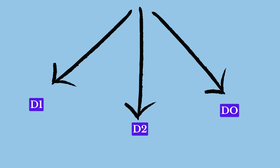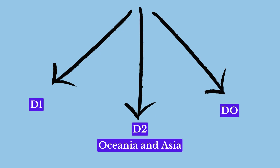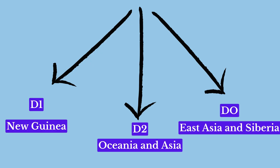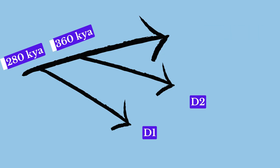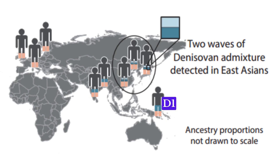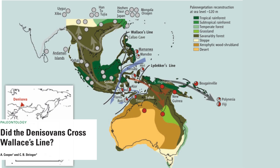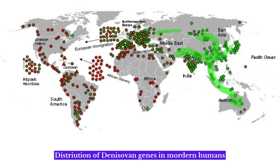Branch D2 contributed to the introgression signal in Oceania and, to a lesser extent, in Asia. Branch D1 appears to be primarily confined to New Guinea and nearby islands, while Branch D0 is found in East Asia and Siberia. This indicates that Denisovans were capable of crossing significant geographical barriers, inhabiting a wide range of environments. The subgroups D1 and D2 diverged from the Altai-Denisovan lineage approximately 280,000 and 360,000 years ago, respectively. The genetic mixing with D1 Denisovans may have occurred as recently as the end of the Pleistocene Epoch, making them among the last surviving archaic hominins. There is debate about whether interbreeding occurred east or west of Wallace's line.